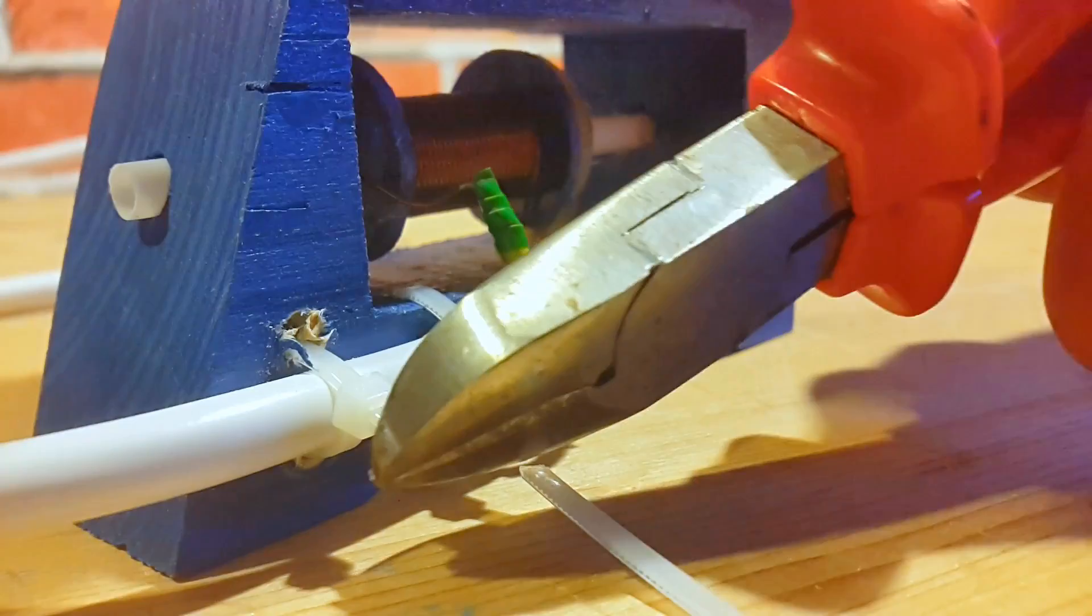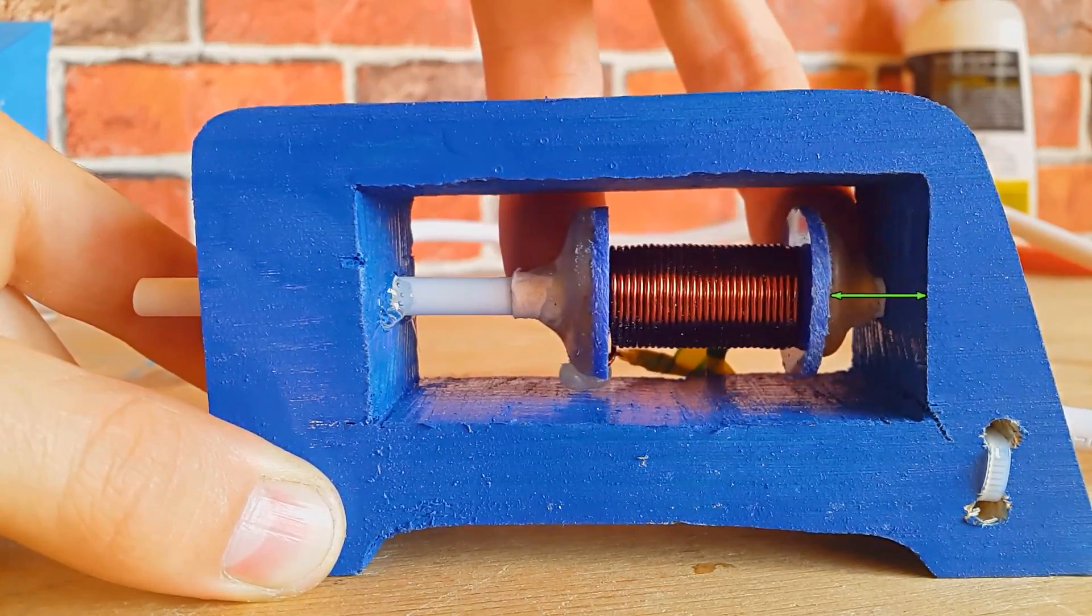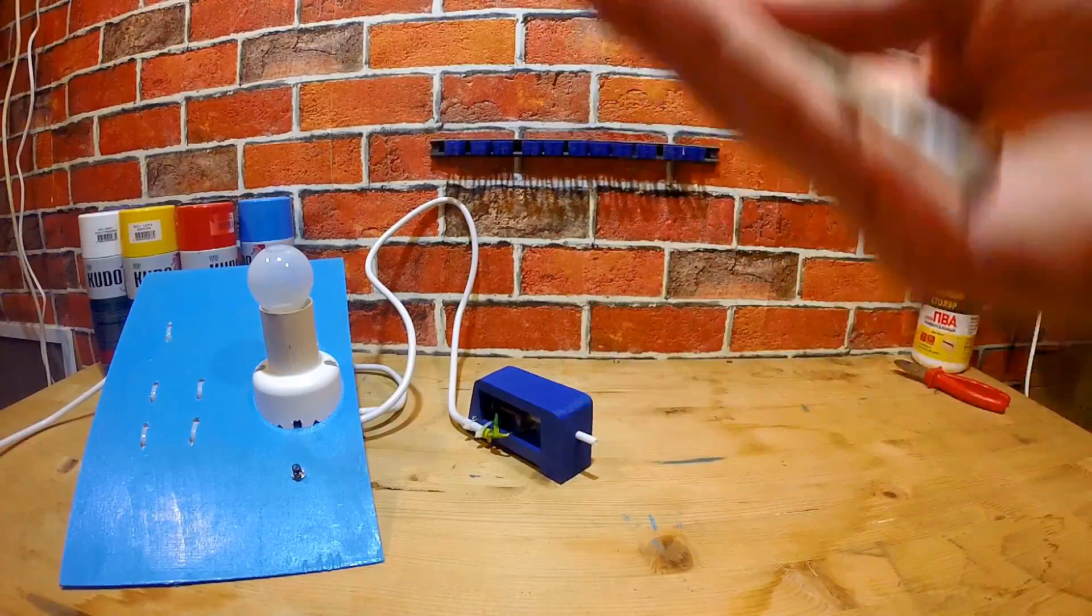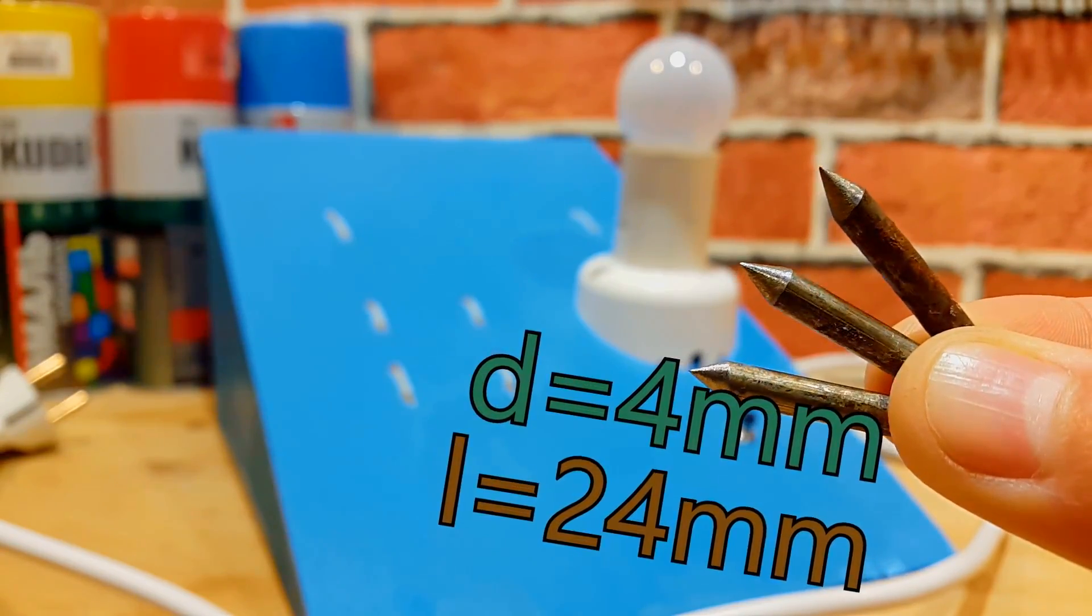Now I can adjust the power by shifting the coil backward and forward. To start with, I'll set it just like in the schematic. And here is the main element of the gun: the bullet. I've made the bullet out of 4 mm nails, length 24 mm.